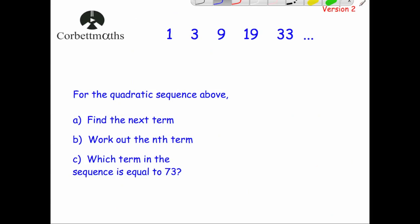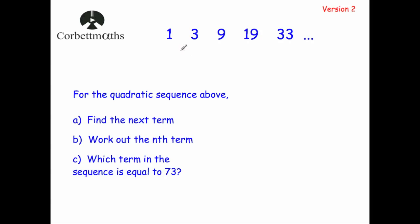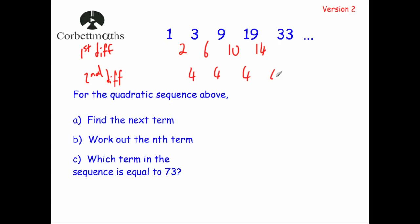Let's have a go at another sequence. The next quadratic sequence is 1, 3, 9, 19, 33. Work out the next term. The first differences are 2, 6, 10, 14. The second differences are 4, 4, 4. So it's going to be 4 again, meaning the next first difference is 18. So the next term is going to be 51. So the next term in the sequence is 51.